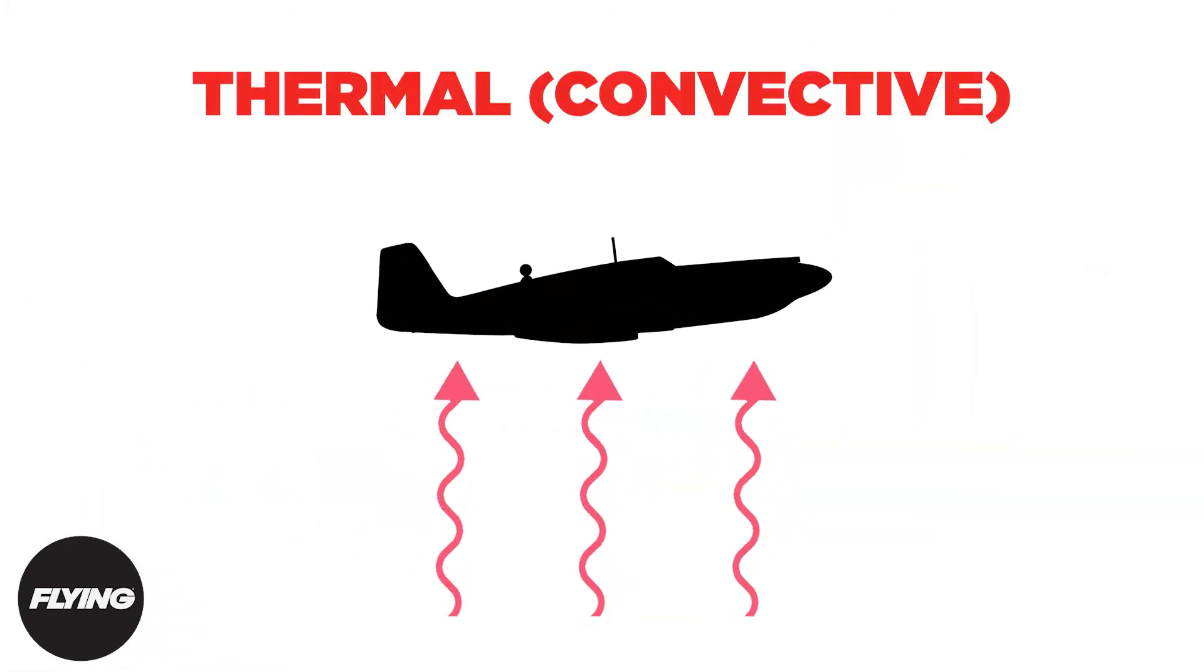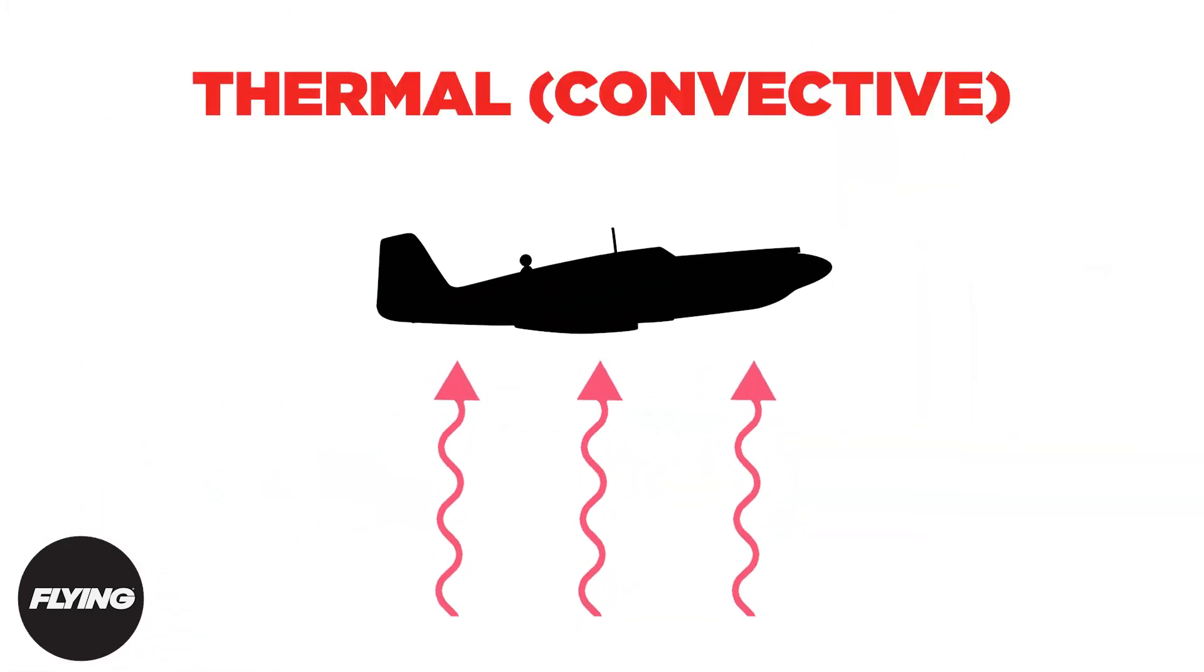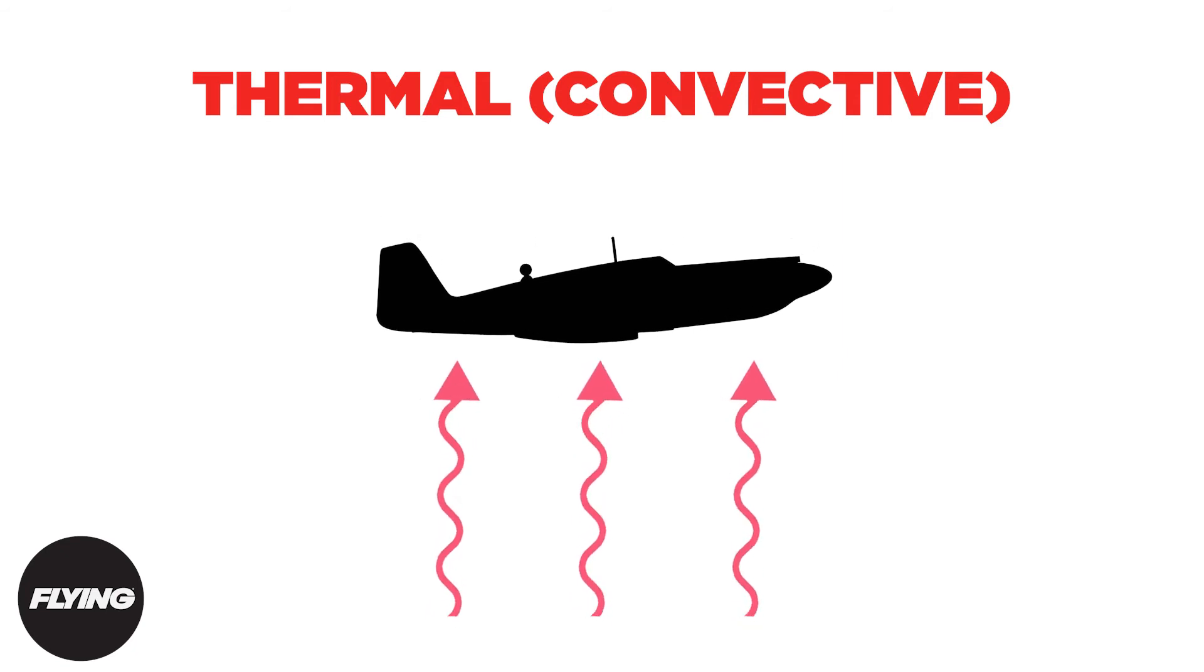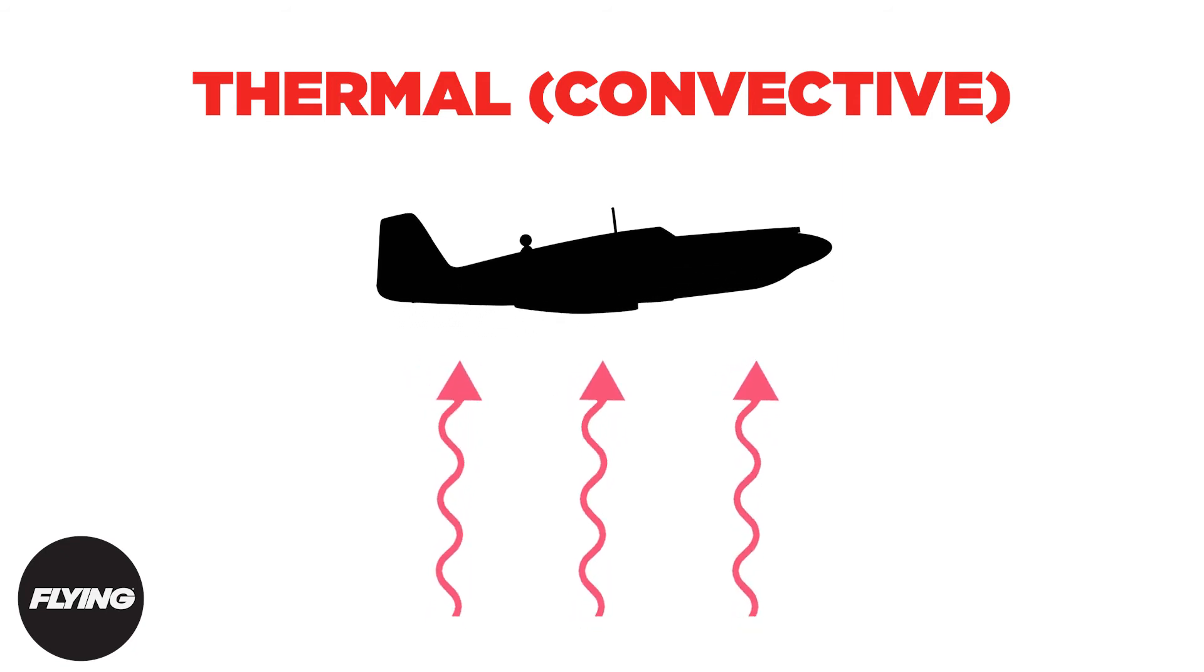Thermal or convective turbulence is caused by columns of warm air rushing up underneath the aircraft. This type can be found closer to ground level where surface temperatures can vary wildly.